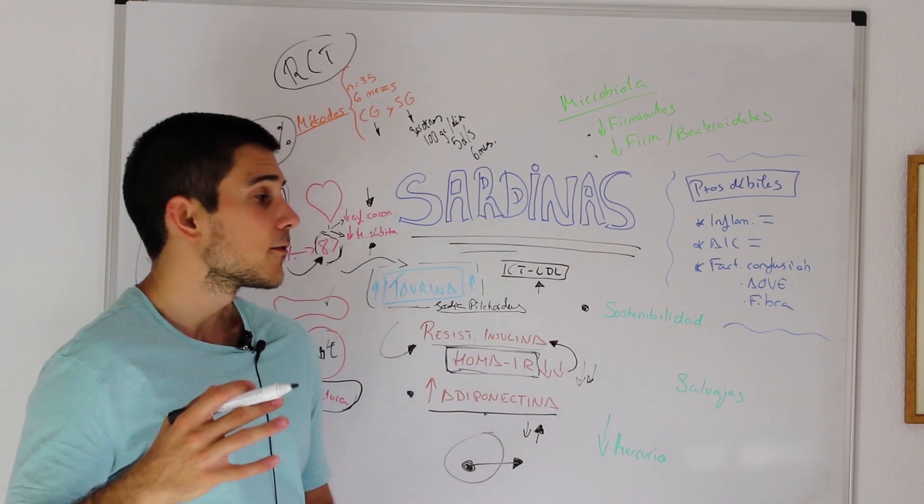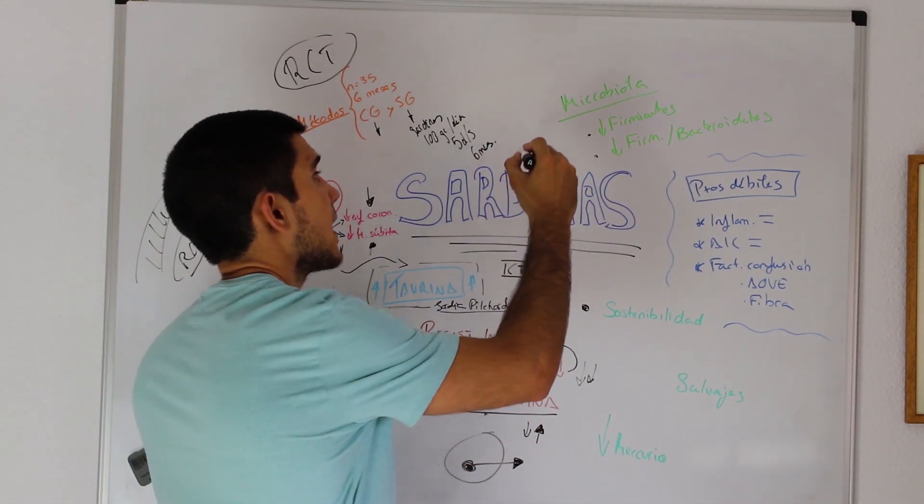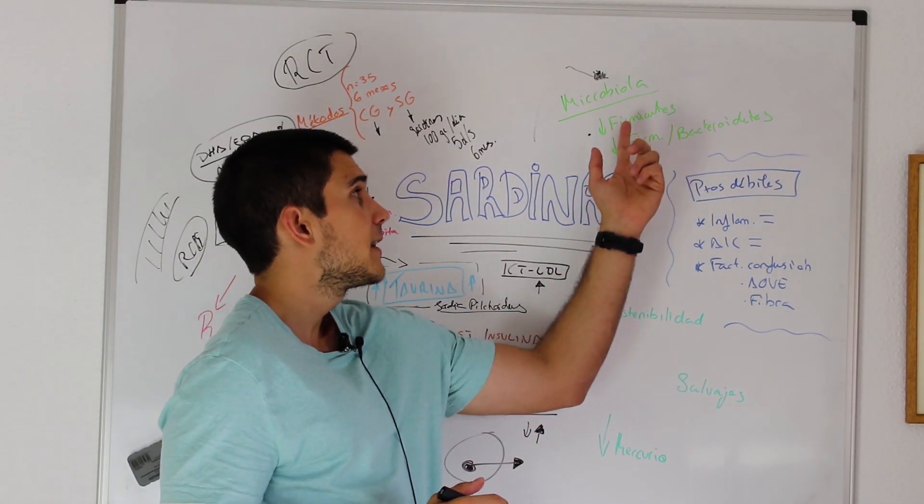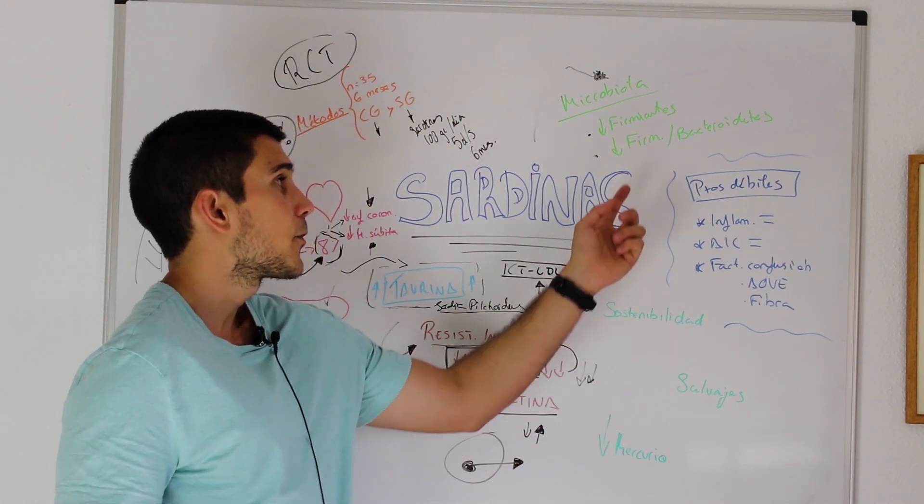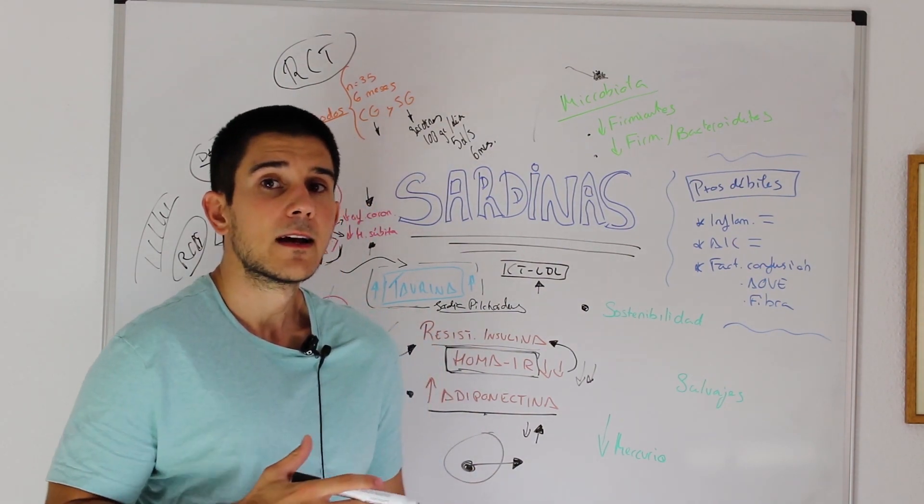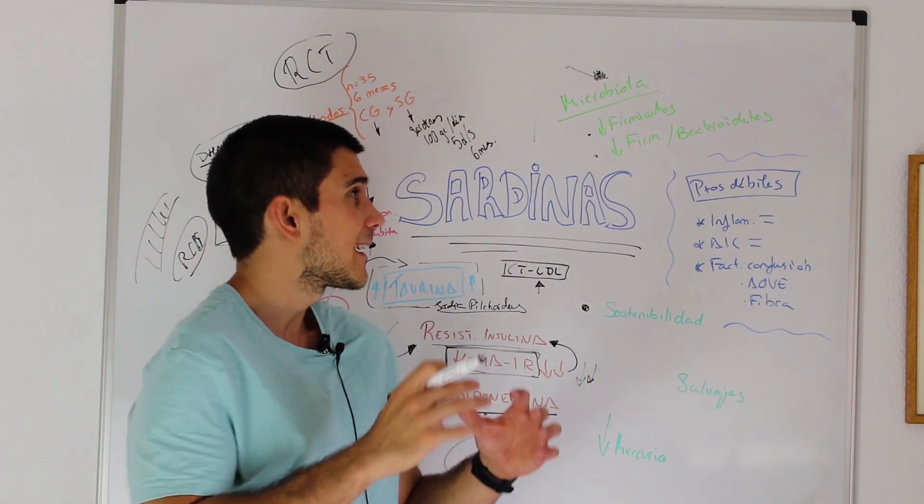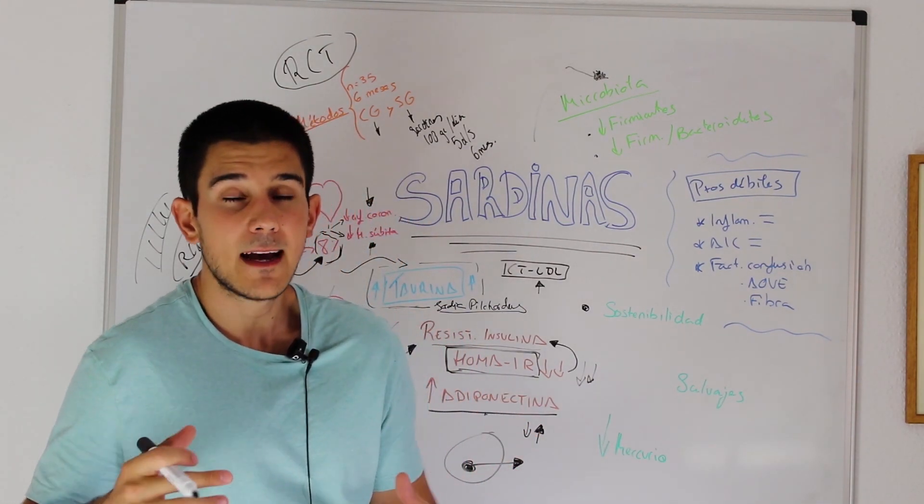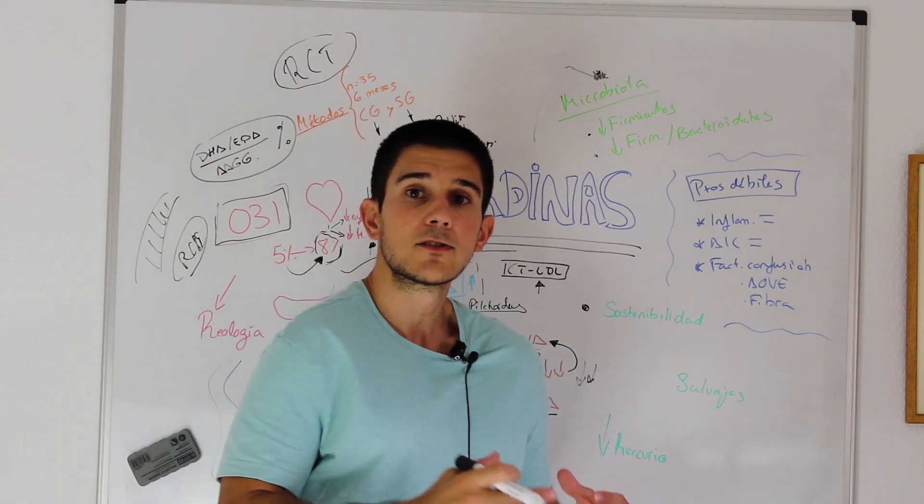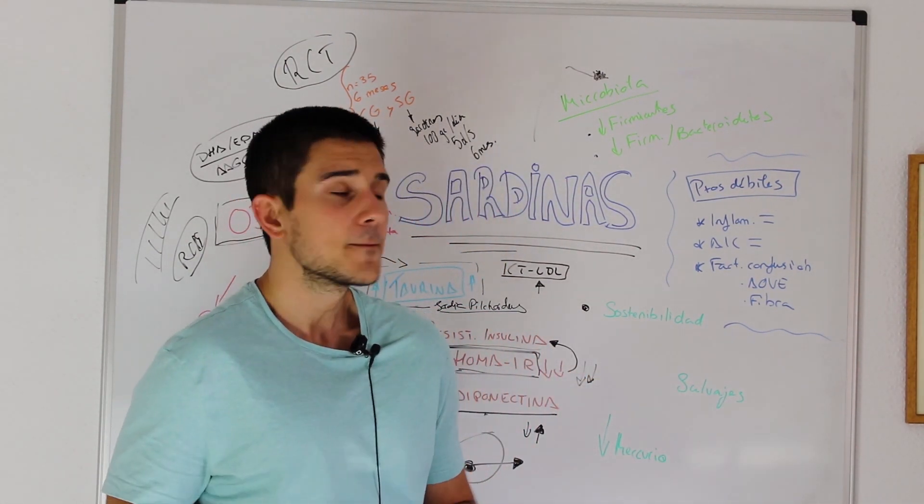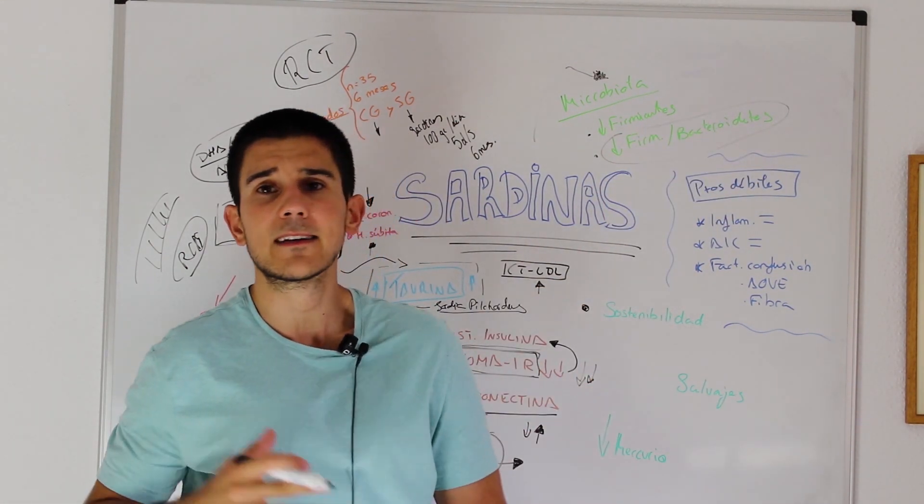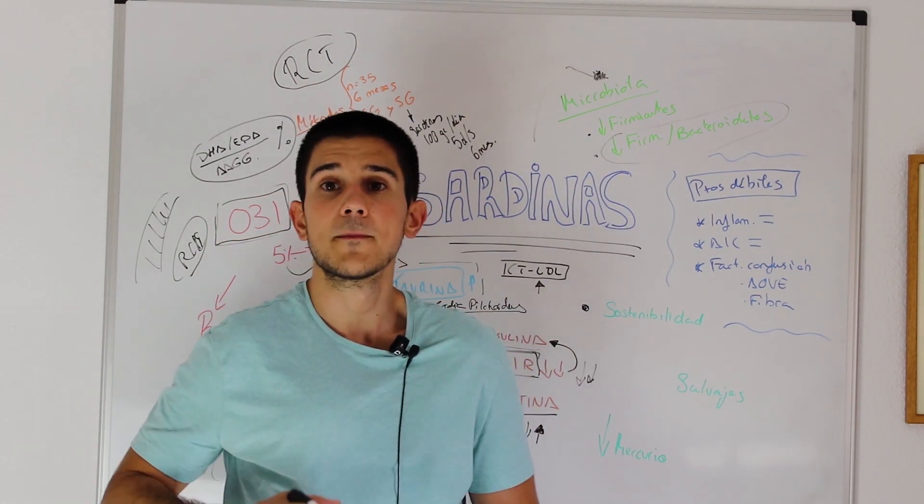Talking about microbiota, microbiome, in the sardine group we found that the phylum Firmicutes went down and the ratio Firmicutes to Bacteroidetes went as well down, which is a very good thing because it's exactly what happens in obese people that lose weight after a bariatric surgery or after a weight loss intervention of any kind. So that is a good thing. A lowering of the Firmicutes to Bacteroidetes ratio is a good thing when it comes to microbiota.